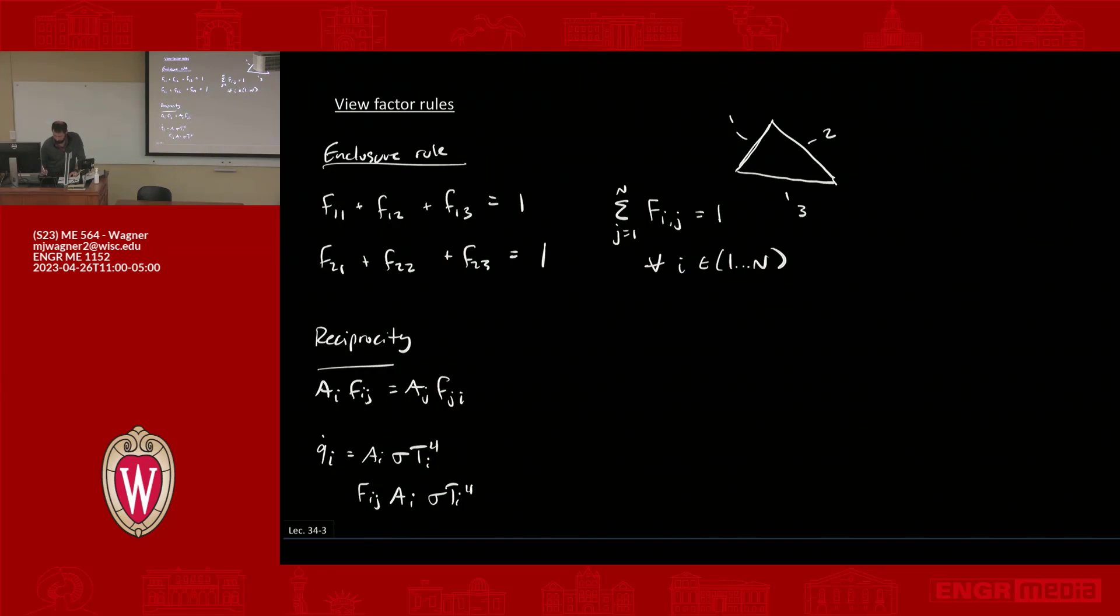If we look at the reverse situation—what is coming from j back to i—that would be fⱼᵢAⱼσtⱼ⁴. We could use these together to say, alright, q̇ from i to j equals what's leaving i, so that would be fᵢⱼAᵢσtᵢ⁴—that's what's leaving i going to j. But we also have to look at what's coming back, and that's the other thing we just computed, so we'd say minus fⱼᵢAⱼσtⱼ⁴.